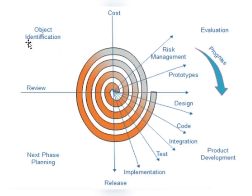In the first quadrant, we identify the objectives of the project. We gather the requirements, identify the objectives, and create a baseline of what to do in the project. Here we have cost estimate, budget estimate, and efforts estimate, and then we move on to the next phase.